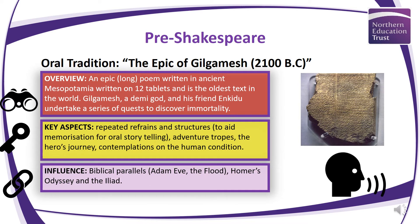When we think about the oral tradition, we obviously don't have recordings of those stories around the campfire from tribes. But the oldest text we have is the Epic of Gilgamesh, dated approximately 2100 BC, written on 12 tablets — the oldest text in the world. It is an epic — a long poem — written in ancient Mesopotamia. It's an interesting story and I'd recommend you read it in terms of understanding mythology. It's about Gilgamesh, a god-like figure, and his friend Enkidu — essentially representing mankind — who undertake a series of quests to discover immortality.